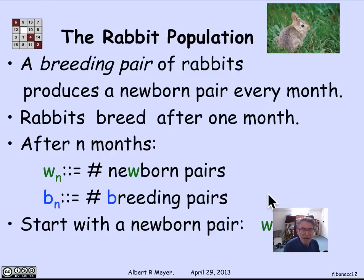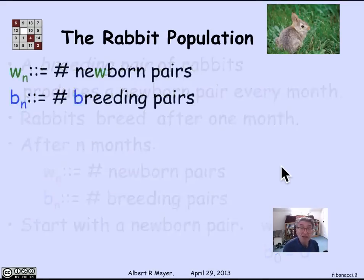Now let's think about what do we have on the next day, on day n plus 1. How do I get breeding pairs on day n plus 1? Well, all of the breeding pairs that existed a month ago still exist. Because in this model, rabbit pairs don't die. We could build that in later. But for simplicity, they live forever.